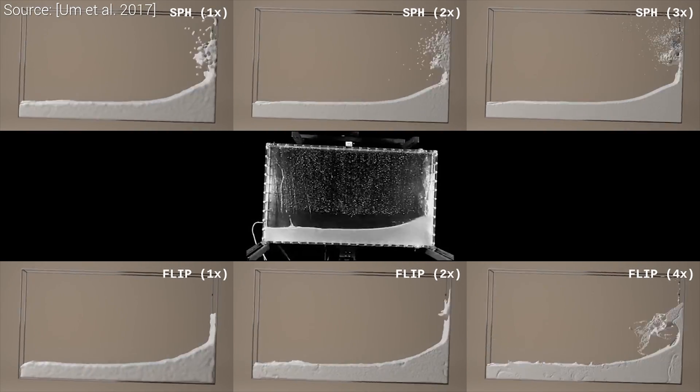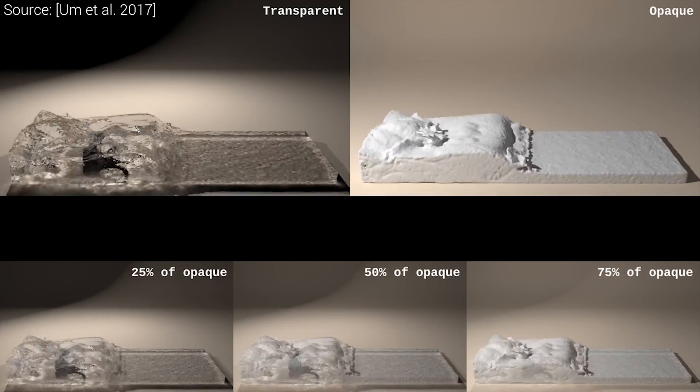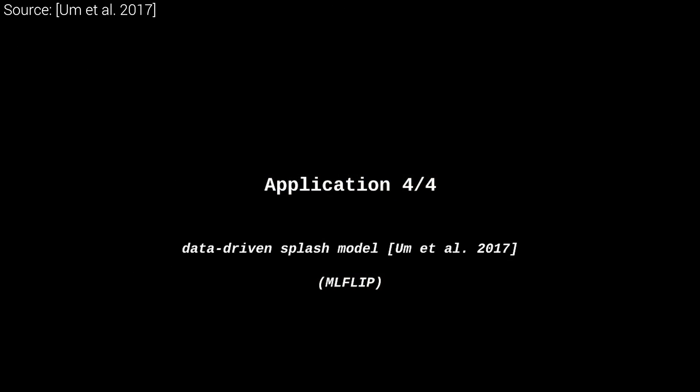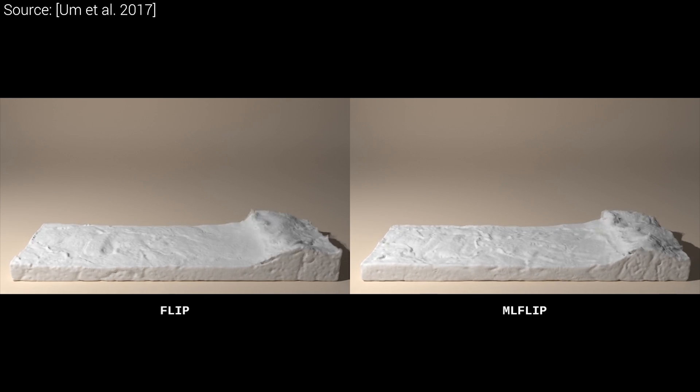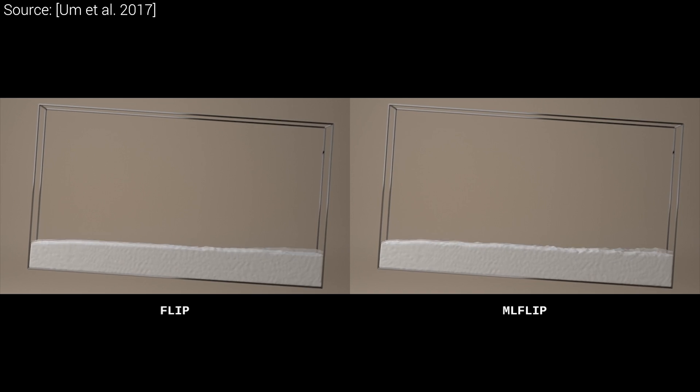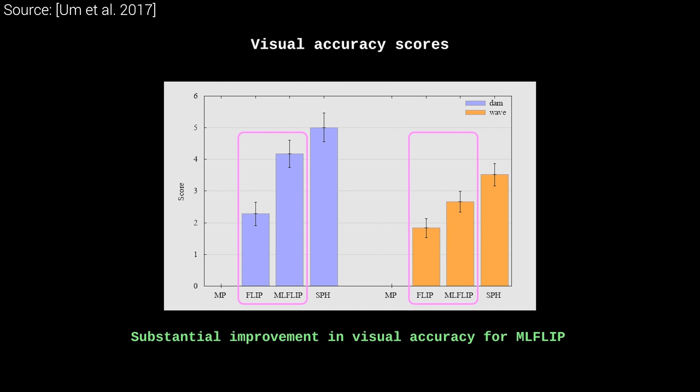where the users are asked to look at two different simulations and as a binary choice, tell us which is the one they perceived to be closer to the reference. The reference footage is a real-world video of water sloshing in a tank, and the other footage that is to be judged is created via a fluid simulation algorithm. Turns out that the reference footage can be almost anything, as long as there are some splashing and sloshing going on in it.